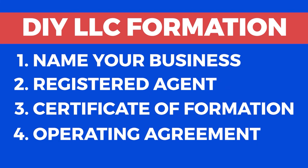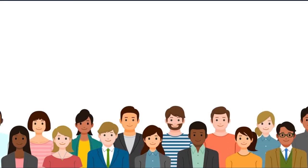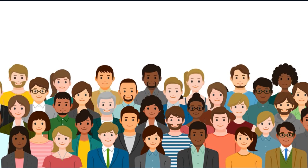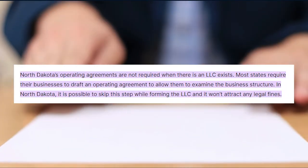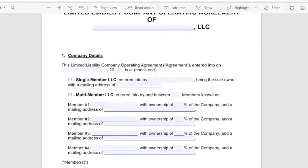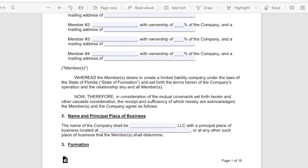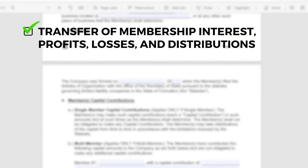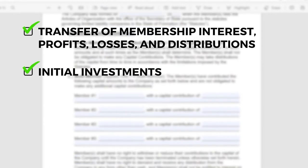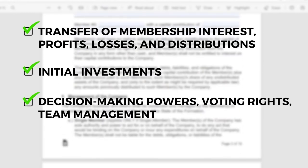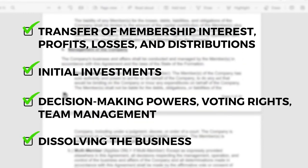Step 4: Preparing an Operating Agreement. An operating agreement is a good idea to have in place with the other members if your LLC has more than one member. Although an operating agreement is not required in Ohio, it should clarify how your company will handle big-picture issues. These include the transfer of membership interest, profits, losses, and distributions, initial investments, decision-making powers, voting rights, team management, and dissolving the business.